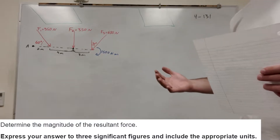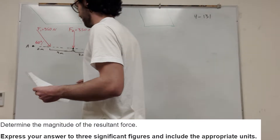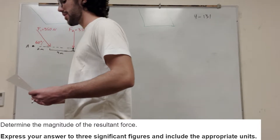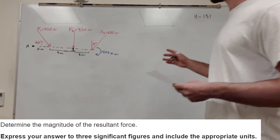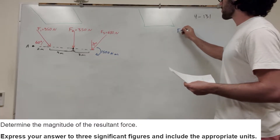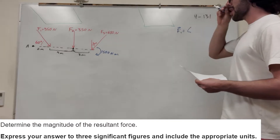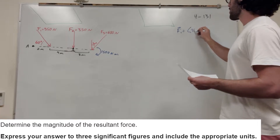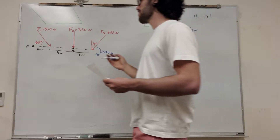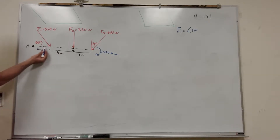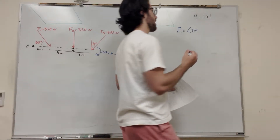Let's start with the resultant force. To find it, we want to break each of these forces into its vector components. So for Force 1, its magnitude is 350. In the x-direction it's acting positive, and we're going to use cosine of 60 — since cosine is adjacent over hypotenuse — which gives us the x-component.